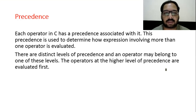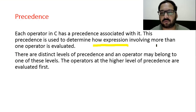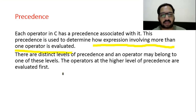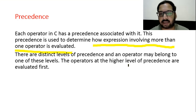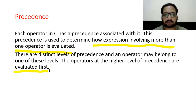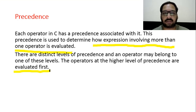Precedence: each operator in C has a precedence associated with it. This precedence is used to determine how an expression involving more than one operator is evaluated. There are distinct levels of precedence and an operator may belong to one of these levels. The operators at the higher level of precedence are evaluated first. Precedence means rank of operator — the operator with a higher rank is evaluated first, and the one with lower rank is evaluated later.